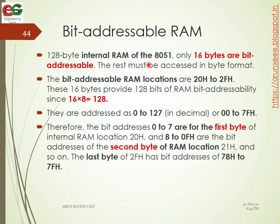128 bytes of internal RAM of the 8051 is split into 3 sections. The first is the register banks. The second is bit addressable RAM, which is only 16 bytes. The rest are in byte format. Bit addressable RAM locations run from 20H to 2FH — that is 16 bytes.